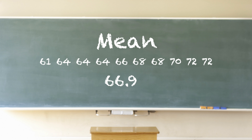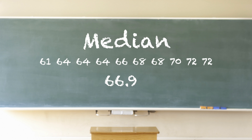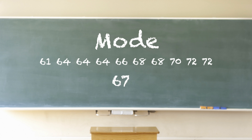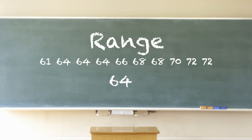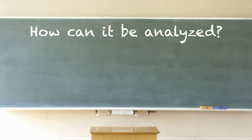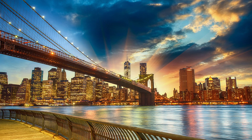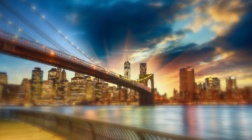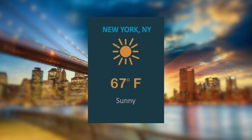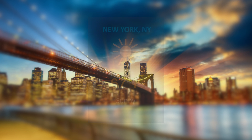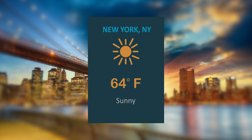In summary, the data set has 10 values: its mean is 66.9, the median is 67, the mode is 64, and the range is 11. This can be analyzed as: the average temperature in New York City is nearly 67 degrees Fahrenheit in October, but sometimes it can get a little cooler because the mode was lower at 64 degrees Fahrenheit.